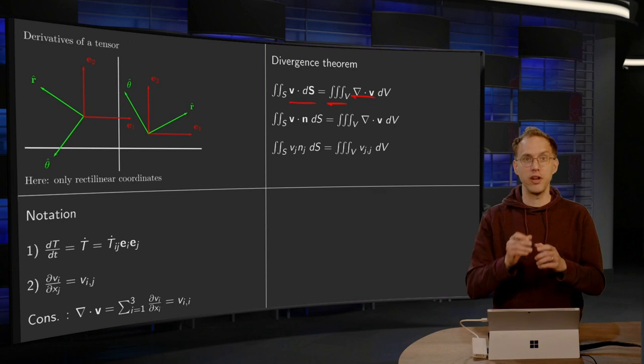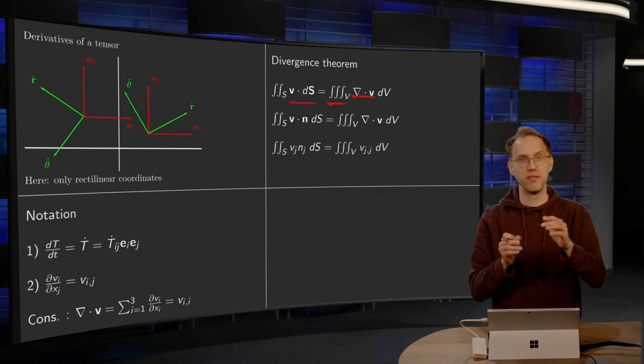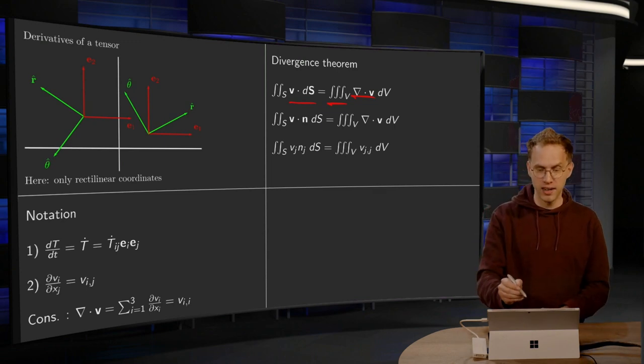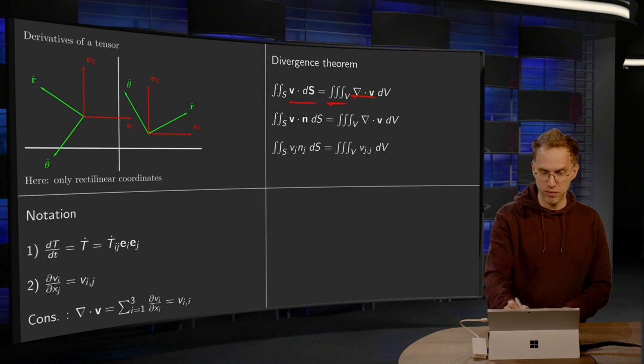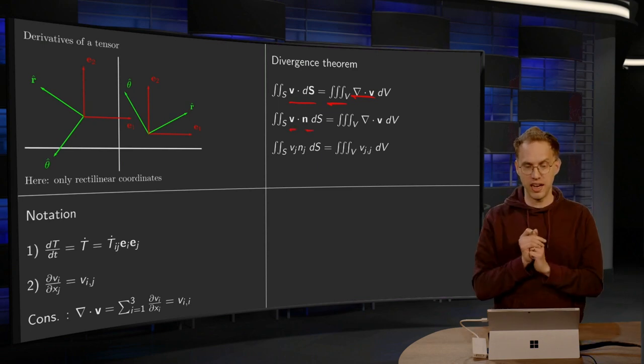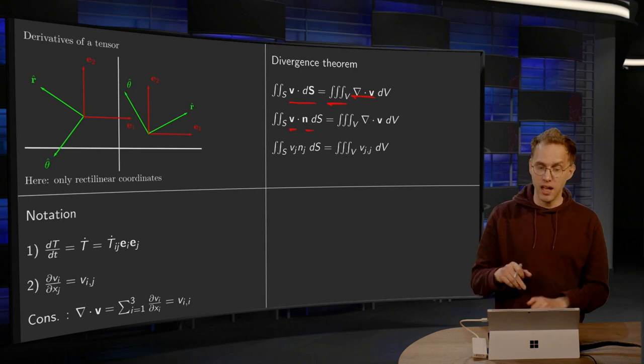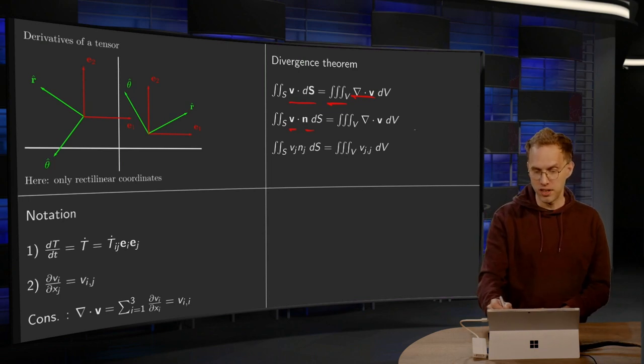Now how do we do this? Well, you have to parameterize your surface S and find the outward normal everywhere, and then you compute v dot n over the surface S, dS.